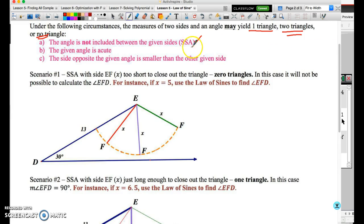The first thing is we need to determine whether ambiguity is even a possibility. There are three requirements to determine whether or not ambiguity is even possible. The first is that the information given must be in the form of SSA, two sides and a non-included angle. The second requirement is that the angle given is acute. And the third requirement is that the side opposite the given angle is smaller than the other given side. If all three of these requirements are in place, then there are three different possibilities.